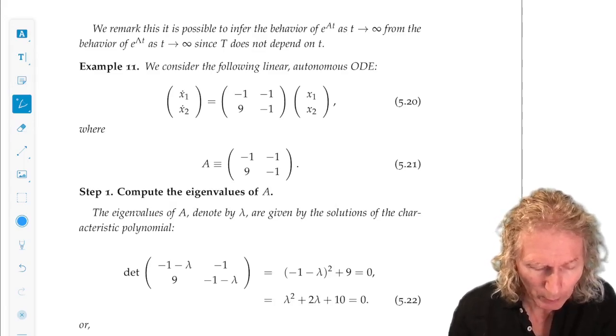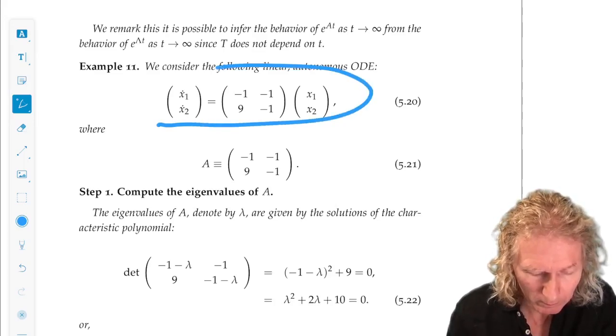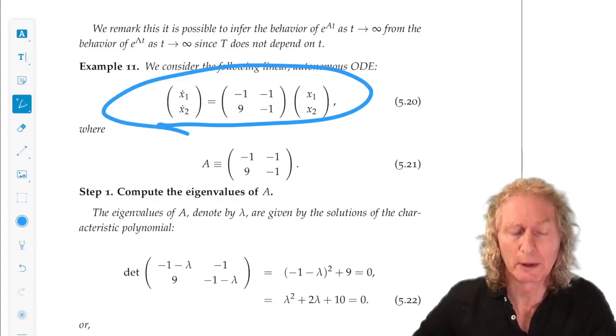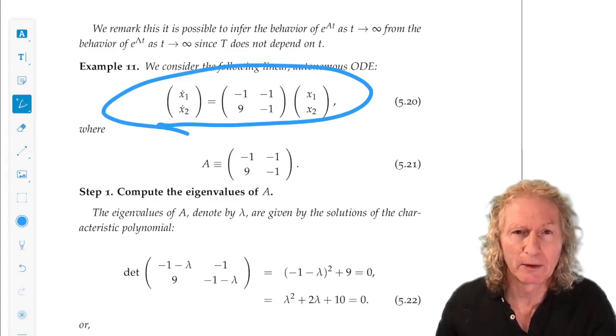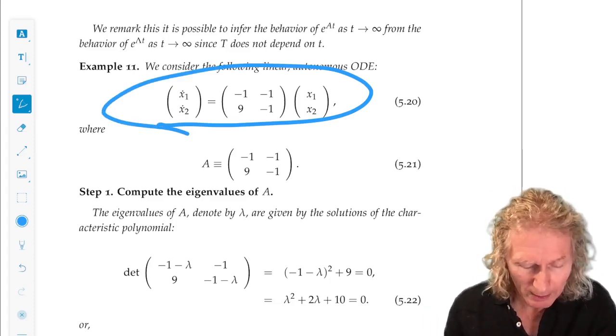Here's the example we're going to look at. Two-dimensional example again, x dot equals Ax, x is two-dimensional, where A is this matrix.